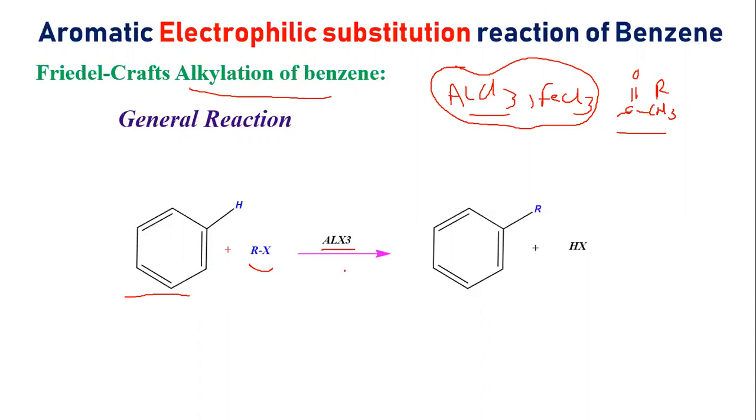If you use the alkyl halide, plus the alkyl group, you can remove hydrogen. The general reaction mechanism - what is the mechanism?